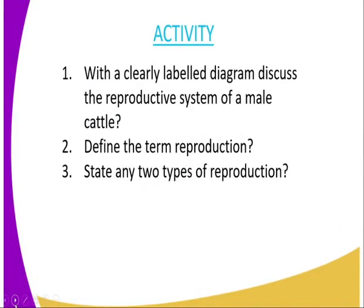We have come to the end of the lesson. The activities for today: number 1, with a clearly labelled diagram, discuss the reproductive system of a male cattle; number 2, define the term reproduction; and number 3, state any two types of reproduction.